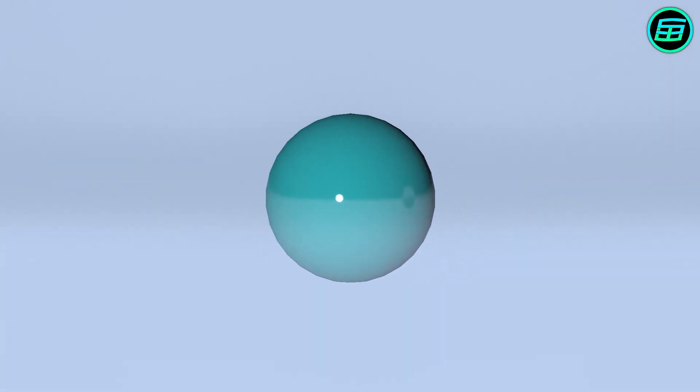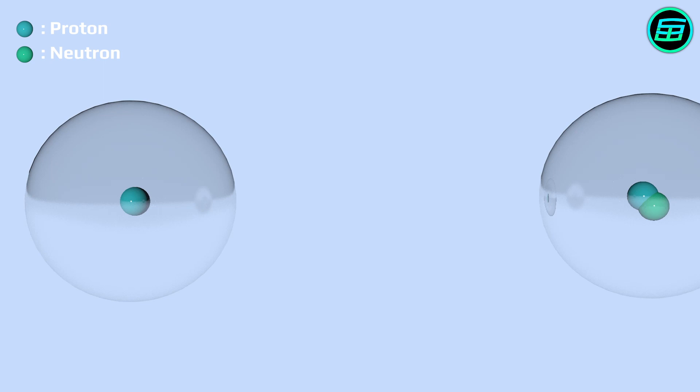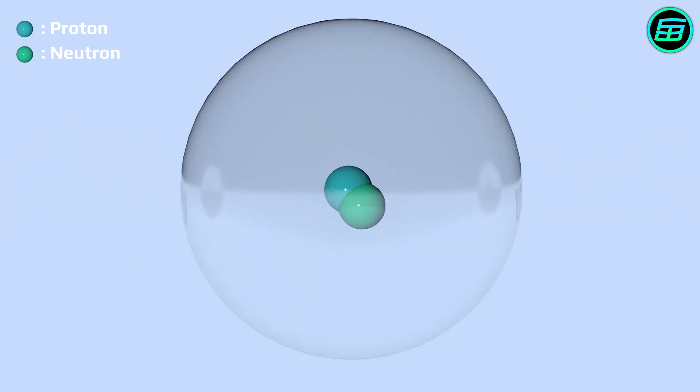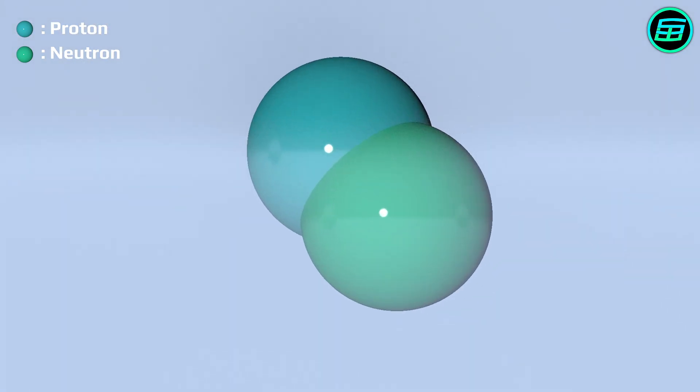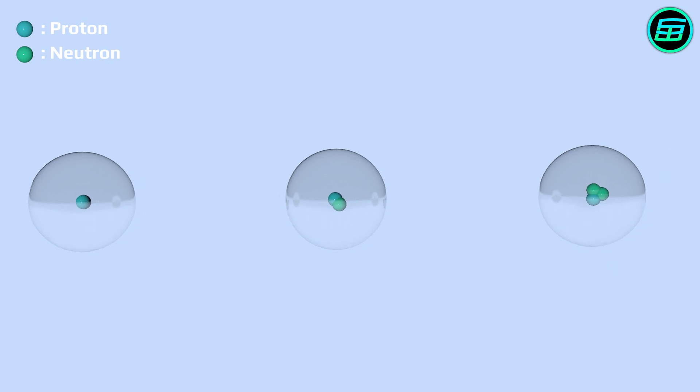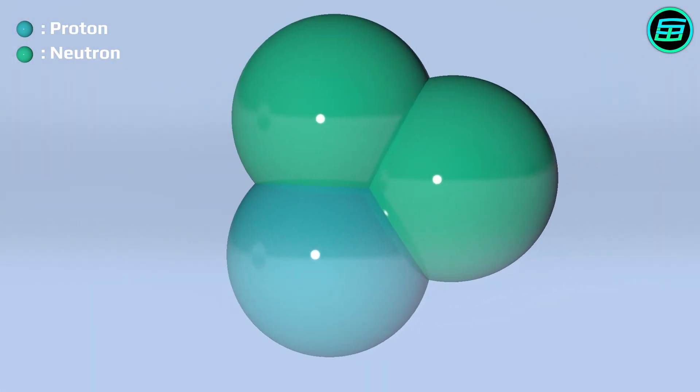These are hydrogen atoms. If we look at the nucleus of this one, we'll see that it contains one proton and no neutrons. But not all hydrogen atoms are the same. Although all of them have one proton, some have no neutrons, while others have one or two neutrons in their nuclei.